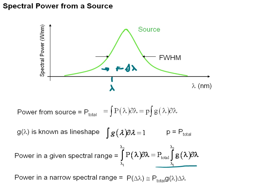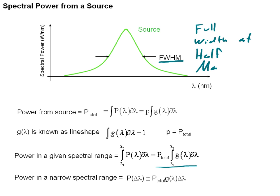One other thing to note is FWHM, which stands for full width at half maximum. That's essentially how wide in wavelength — delta lambda — our sources are. This is often used to illustrate the spectral breadth, or how many colors a source emits, because many sources put out somewhat symmetrical shapes. To illustrate how to calculate the spectral power from a source, let's solve a problem on the next slide.